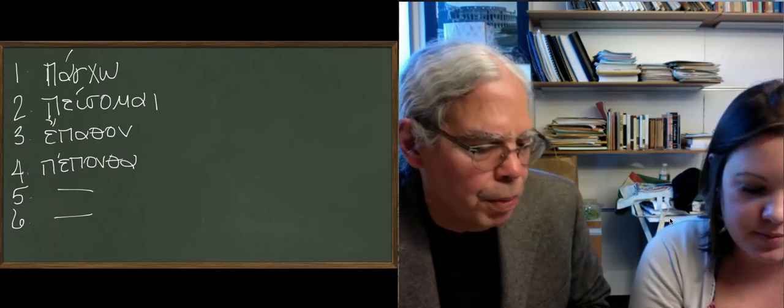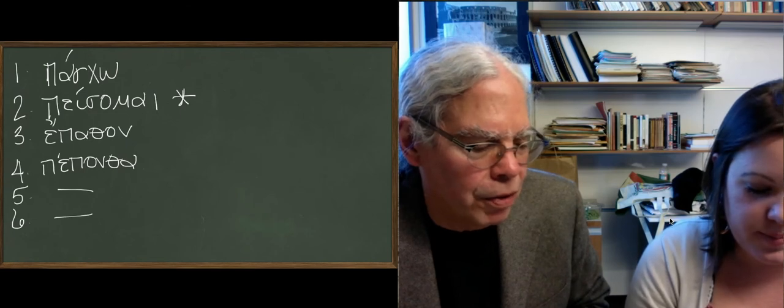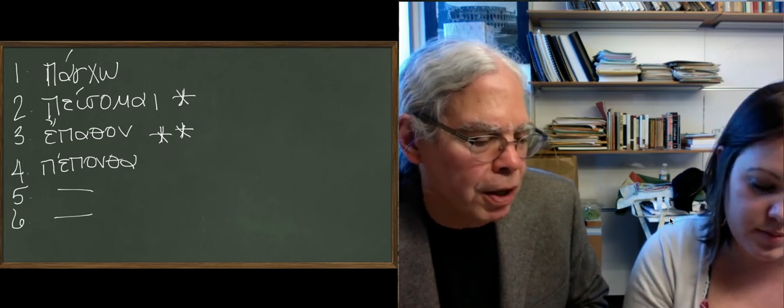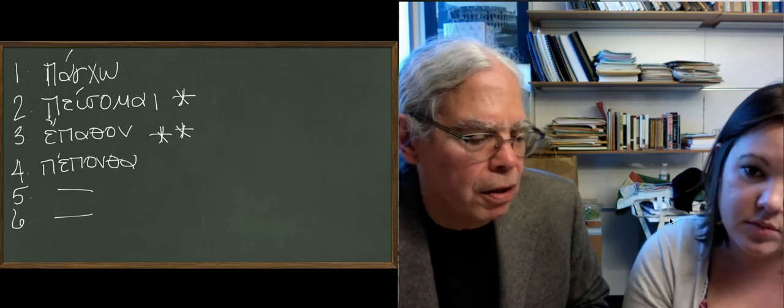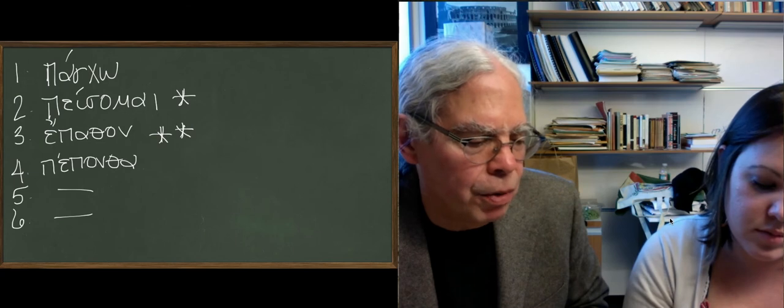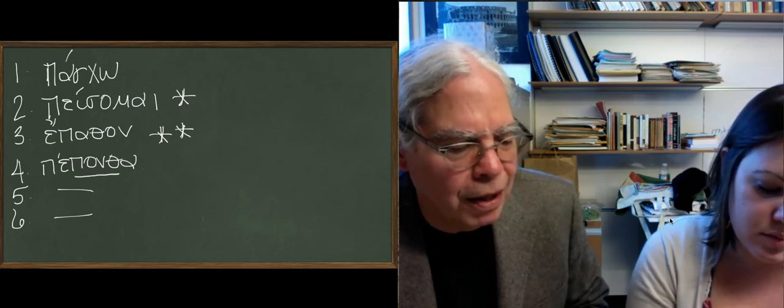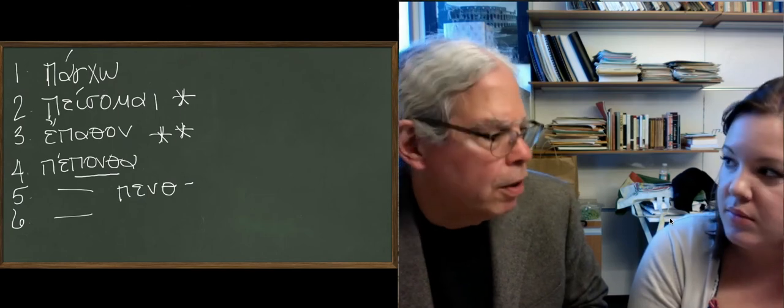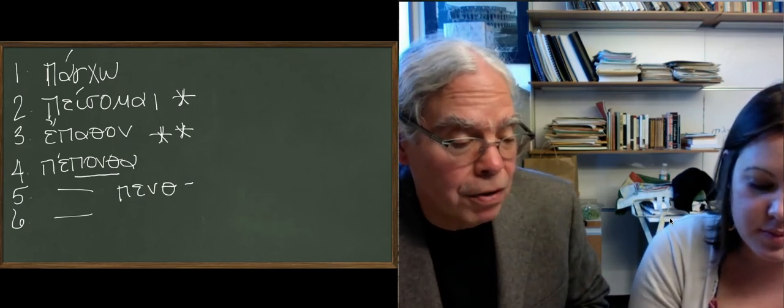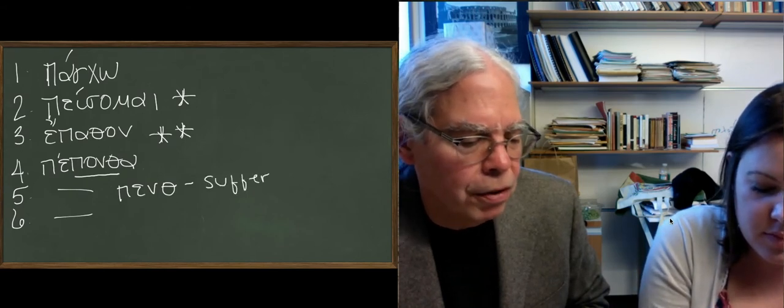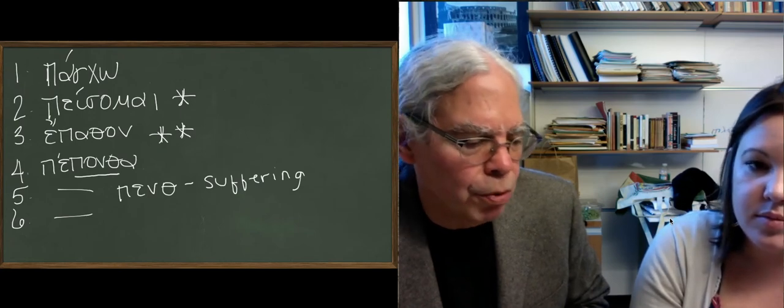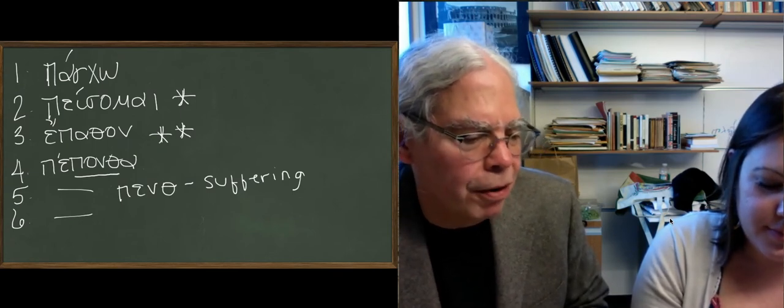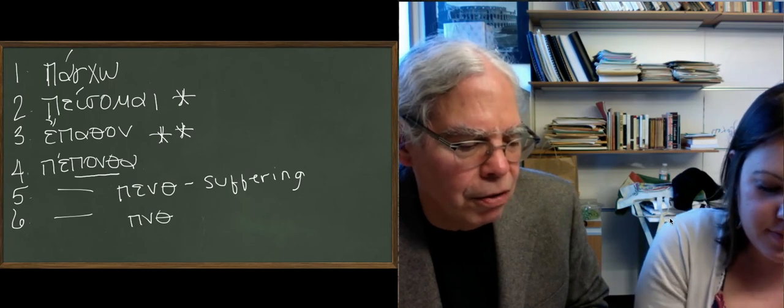If we look at the fourth principal part, pepontha, we've got a reduplication, and the implication is that the root of this verb in the perfect is ponth, which should vary with penth, p-e-n-t-h. And it turns out there's a root noun, penthos. You may have heard of this character, Pentheus, in the Bacchae of Euripides. Anyway, it means suffering, or sorrow. It's the older word, we learned pathos, but penthos is the root noun from this verbal root, penth.